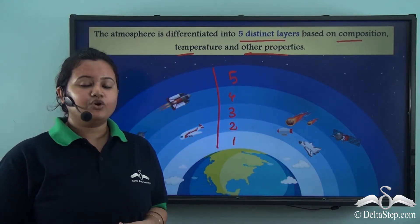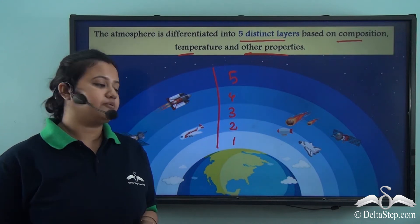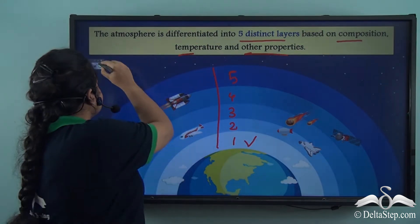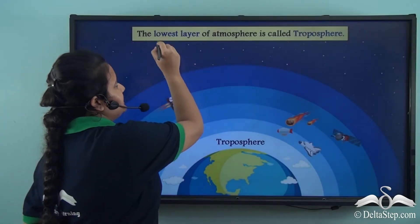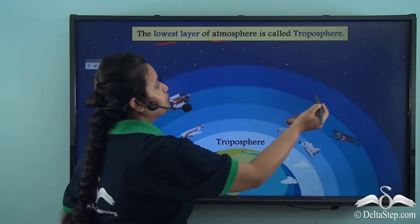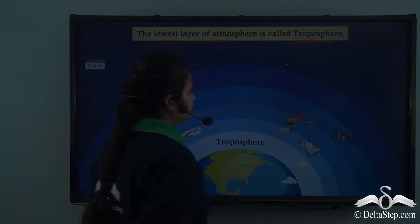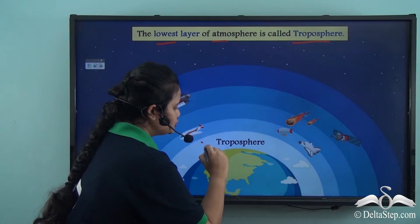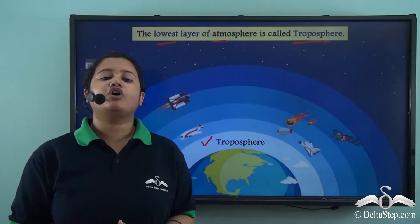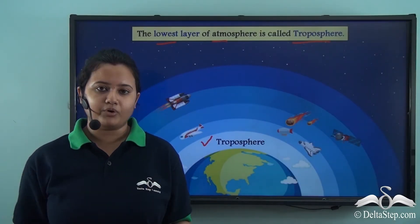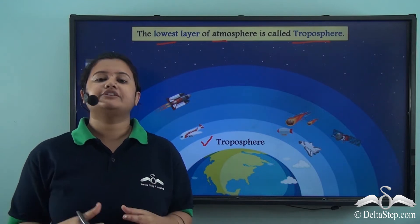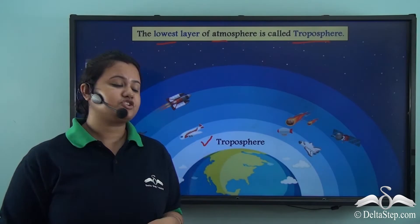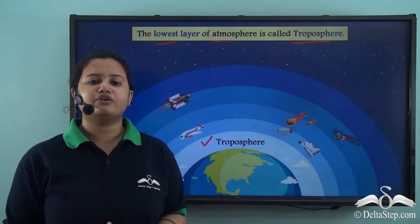In today's video we will discuss in detail about the lowest layer of the atmosphere. The lowest layer of the atmosphere is called the troposphere — it is the layer closest to the earth's surface. This layer is very important because all weather phenomena like rainfall and cloud formation take place here.